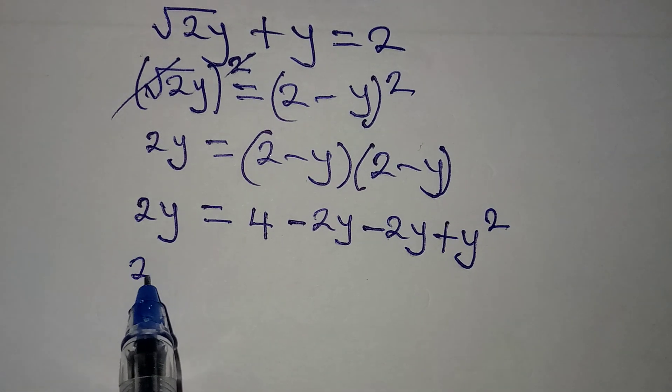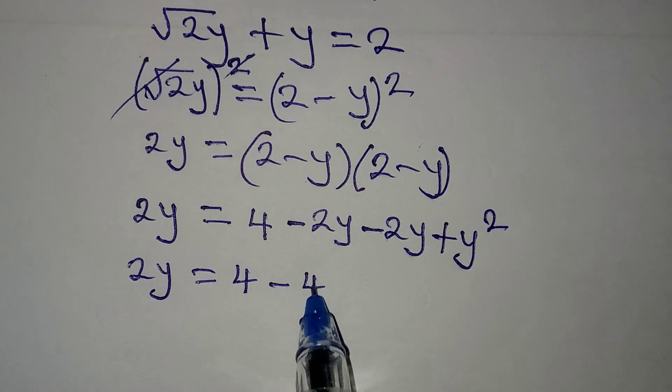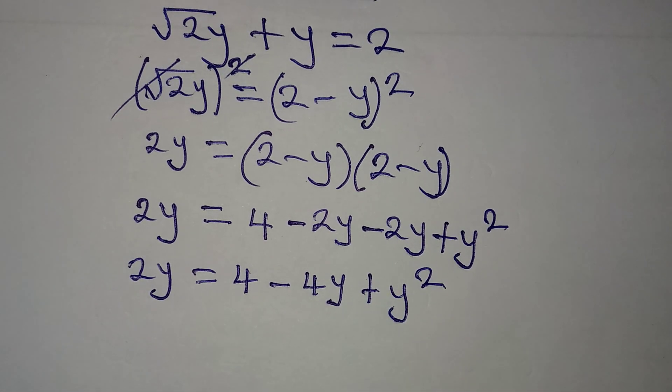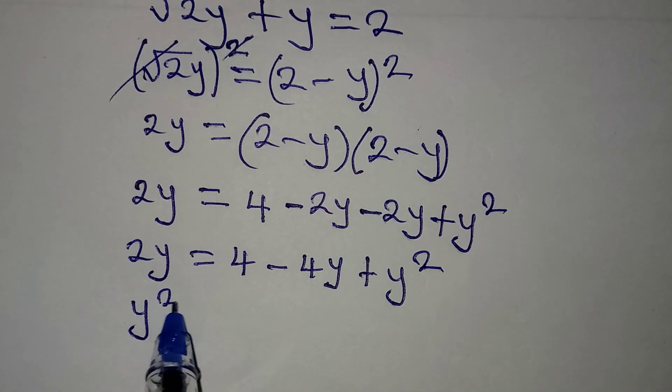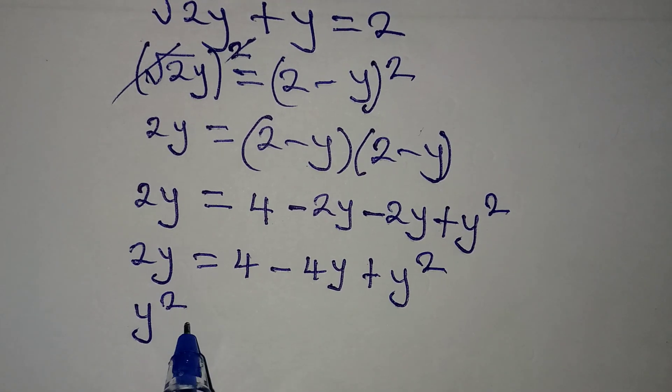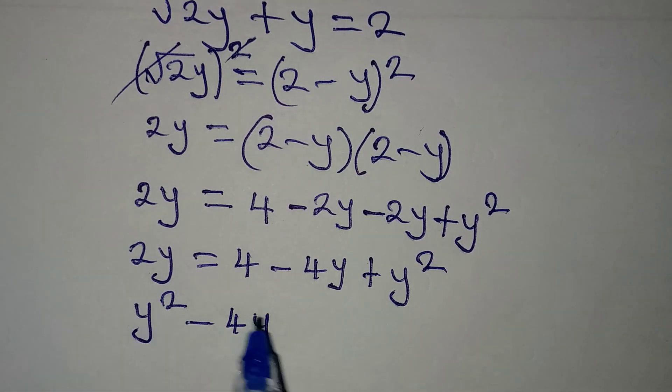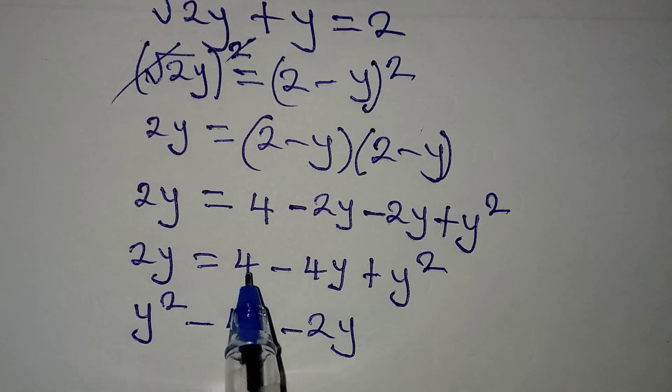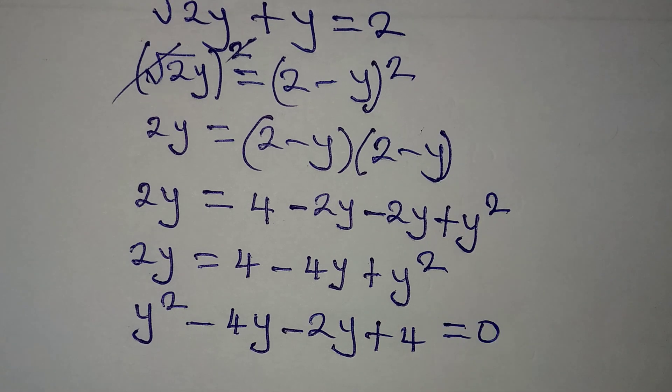This is 2y equal to 4 - 4y + y². Now remember that this is the same thing as y². I want to start with y², then we have -4y, which is this. This becomes -2y, and this is plus 4. Everything here is equal to 0.